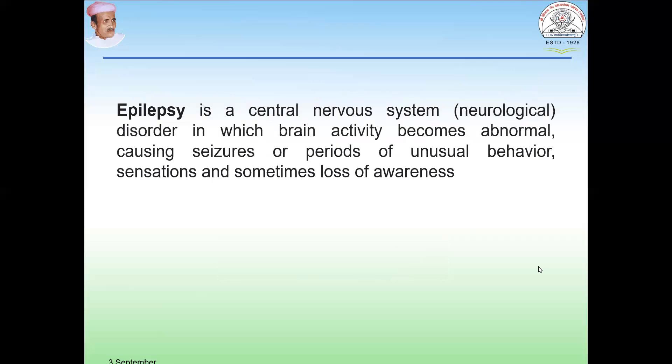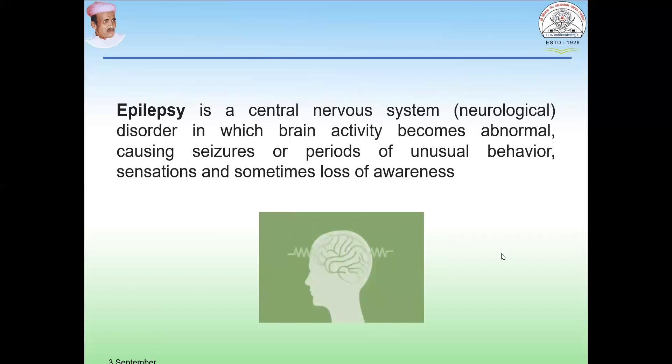What is epilepsy? It is also a part of convulsion. Epilepsy is a central nervous system disorder in which brain activity becomes abnormal. It is mainly related to your central nervous system, and in this case you can observe abnormal behavior which causes seizures or periods of unusual behavior — a certain gap where you cannot observe proper behavior in a person. There is also sensation and sometimes loss of awareness. These lead to epilepsy.